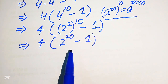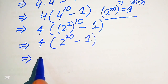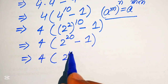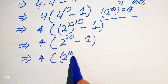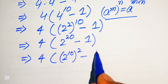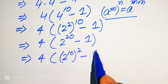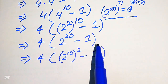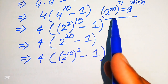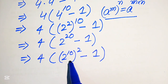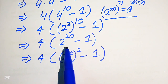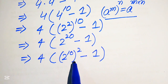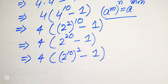We can rewrite 4 times 2 to the power of 20 in the form 4 times 2 to the power of 10, the whole squared, minus 1. When we multiply the two exponents it gives us 20 again, so we write 20 in this form.